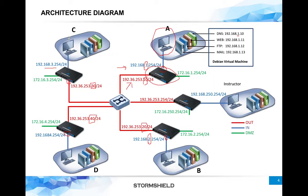This is just to give you an idea of the architecture. All the external interfaces of each trainee's firewall are connected via a switch to one centralized instructor firewall, which has the IP 192.36.253.254 and acts as the default gateway for all the other firewalls. This will be fully explained during the training.